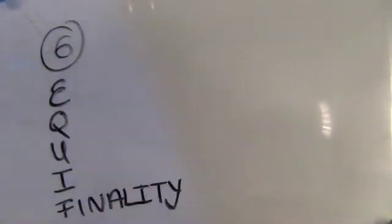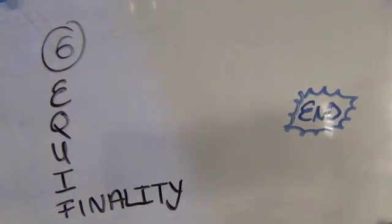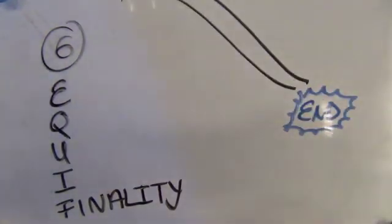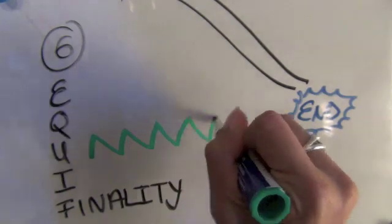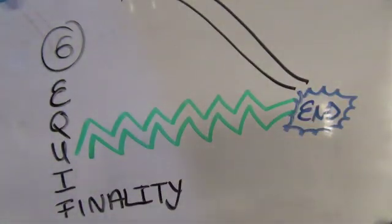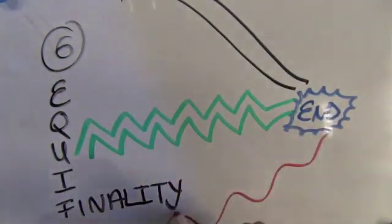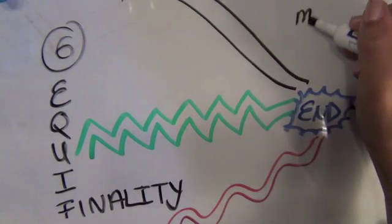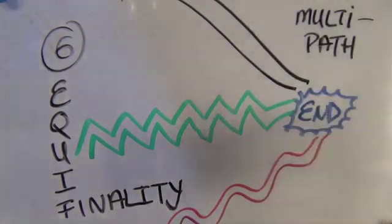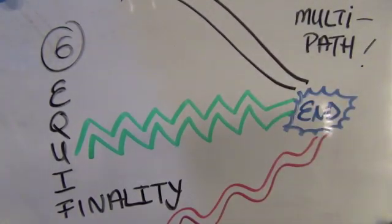Equifinality is defined as the existence of many different ways of arriving at an end state within an open system. And so, a system must have flexible patterns of organization, allowing for specific achievements despite having started at different points. There are multi-paths to get to the end.